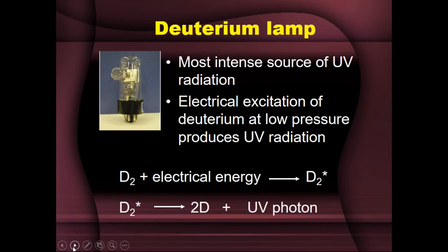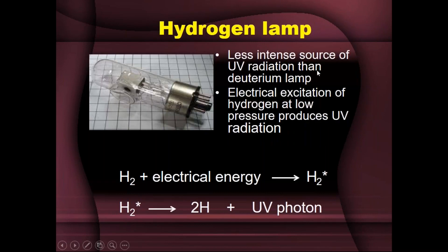Then there is the hydrogen lamp, similar to the deuterium lamp, except the bulb is filled with hydrogen at low pressure. Electrical excitation of hydrogen at low pressure produces UV radiation; the excited H₂* molecule dissociates to give two hydrogen atoms releasing one UV photon. It also emits radiation from 160 to 375 nanometers, just like the deuterium lamp, but it is a less intense source of UV radiation than the deuterium lamp.